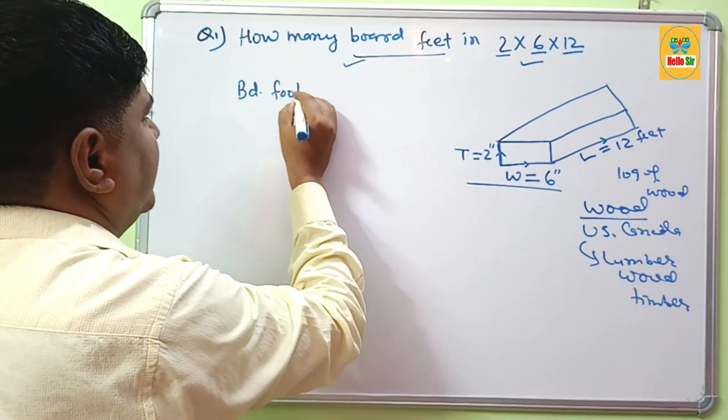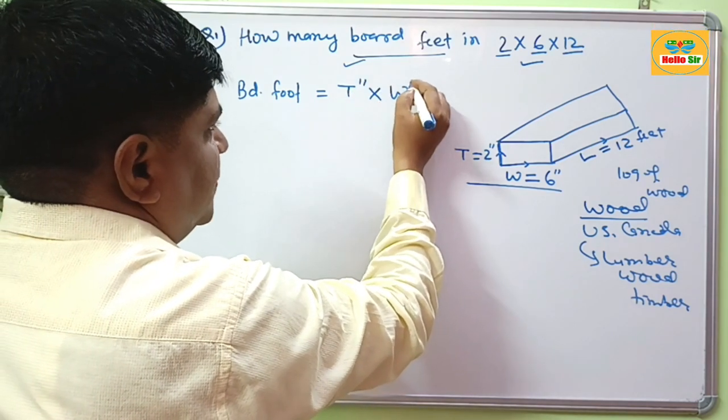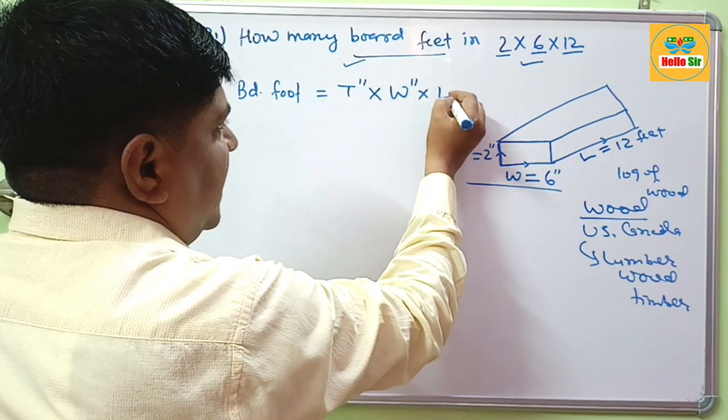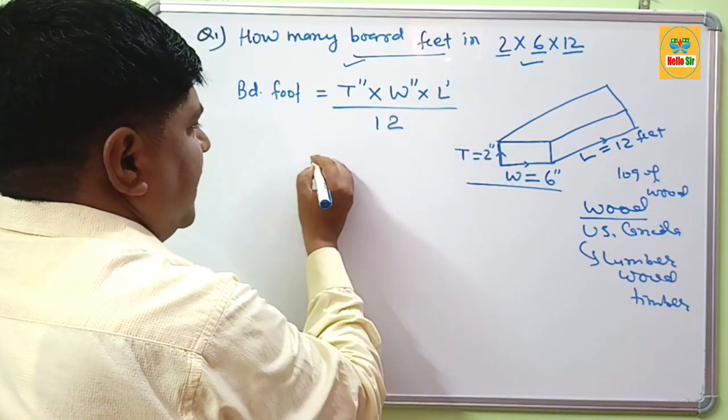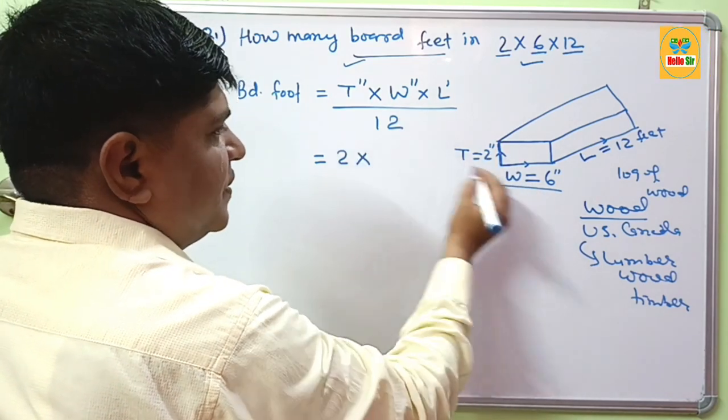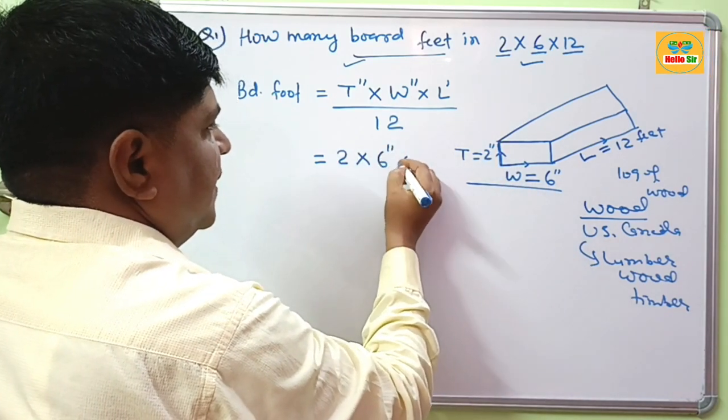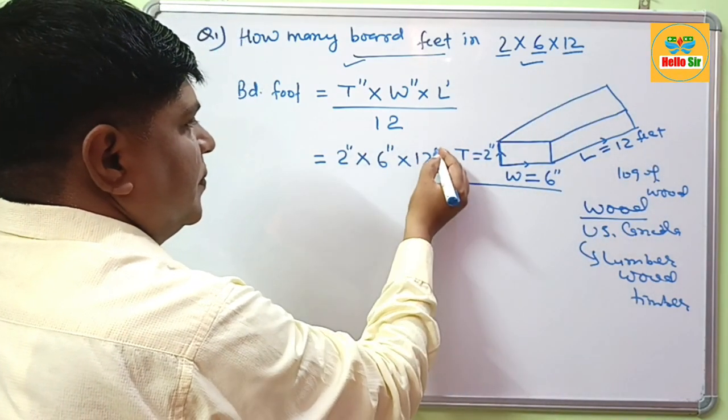Board foot equals thickness in inches, multiply width in inches and length in feet divided by 12. And here, your dimension thickness is 2 inches, width is 6 inches and the length is 12 feet.